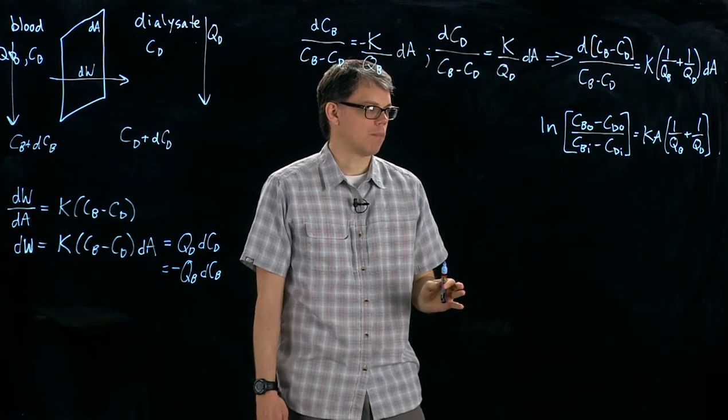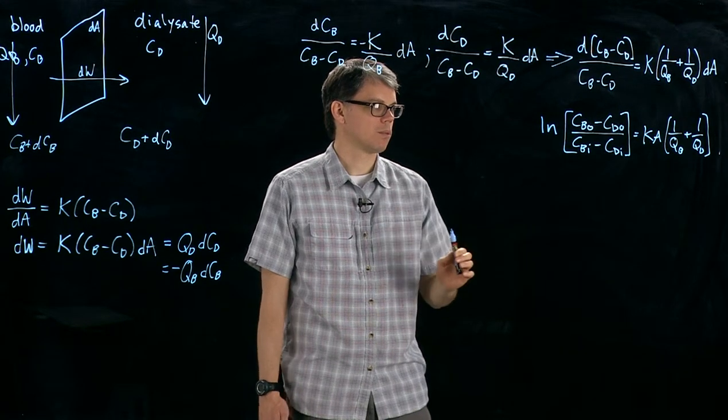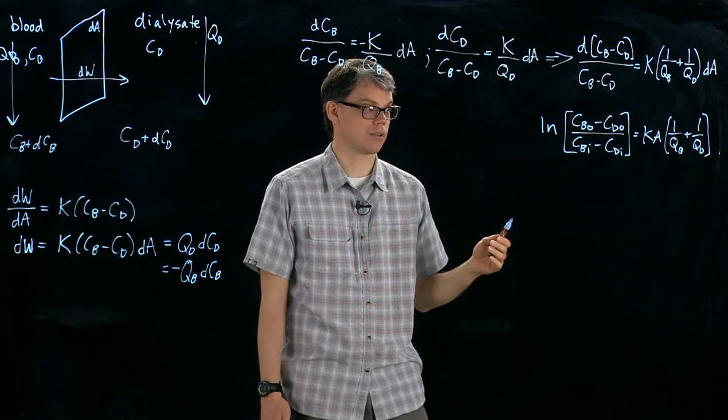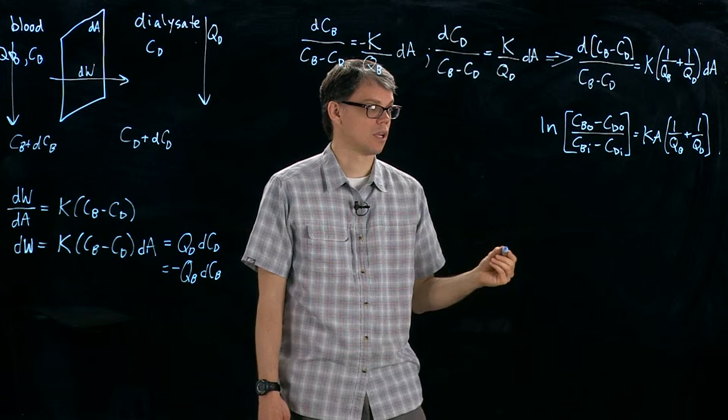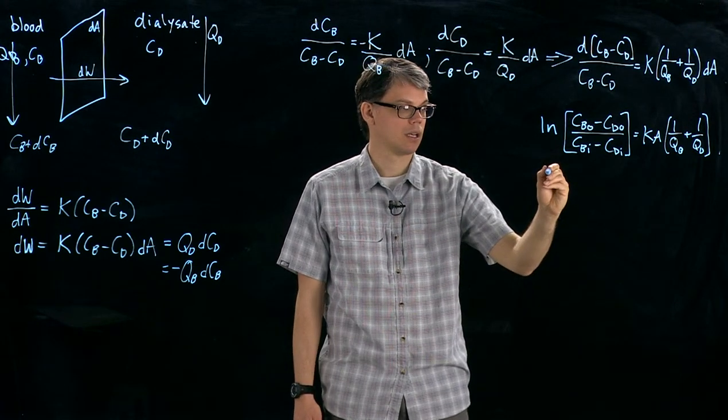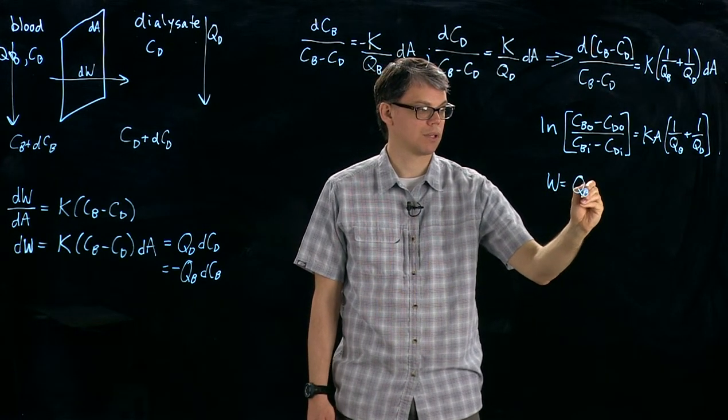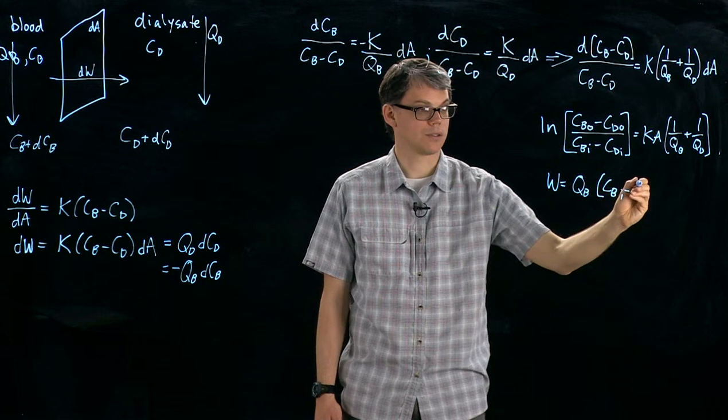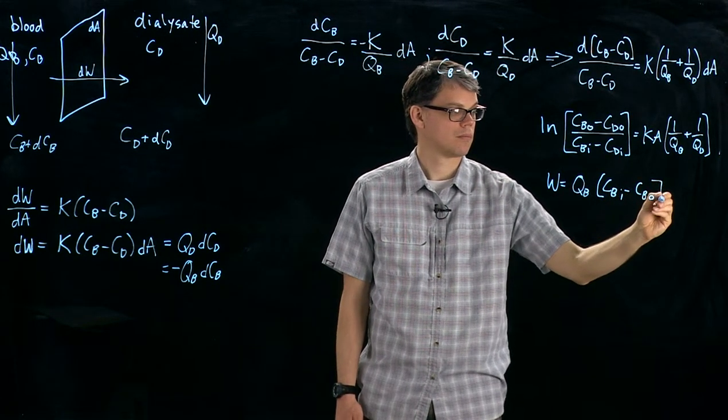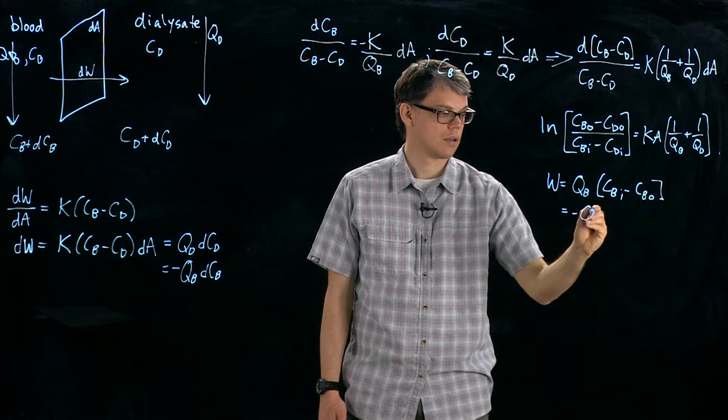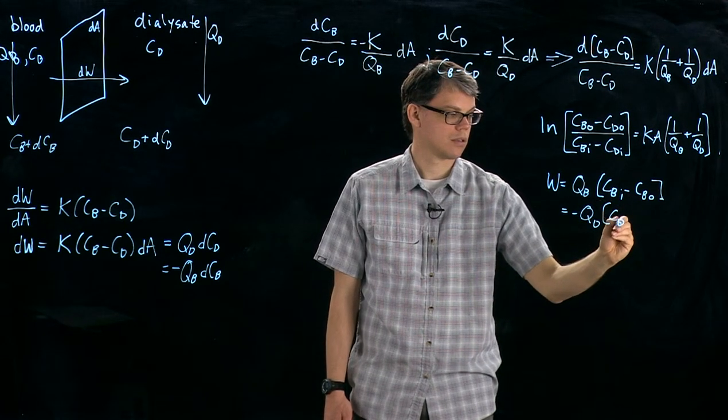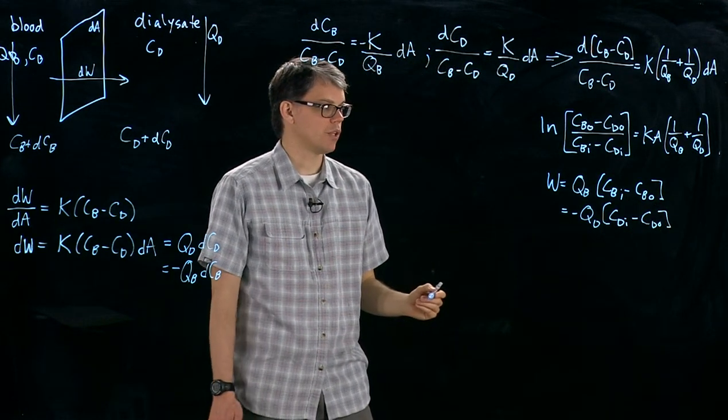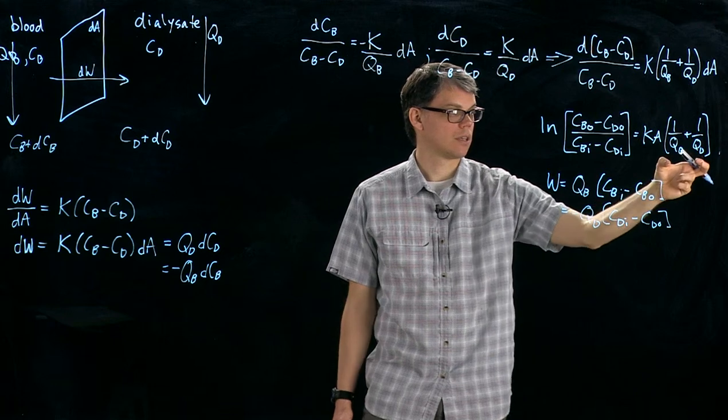We can look at this equation and do a little bit more manipulation in order to get an equation for the total mass transfer. In order to do that, we're going to use the fact that the total mass transfer, for example, in the blood is equal to the flow rate in blood times the change in concentration or the change in the dialysate.